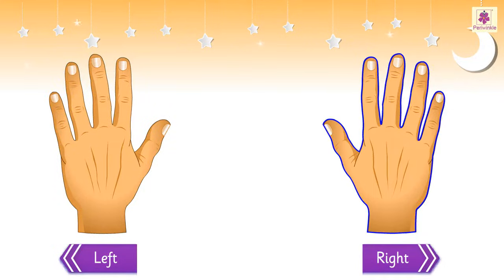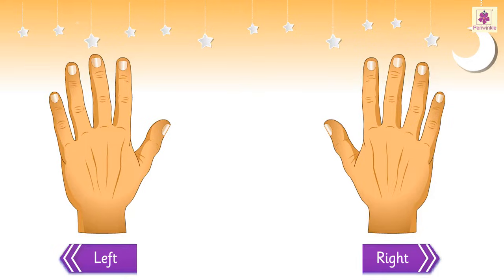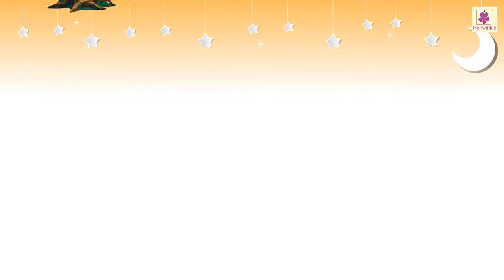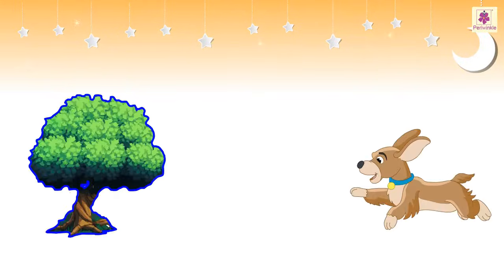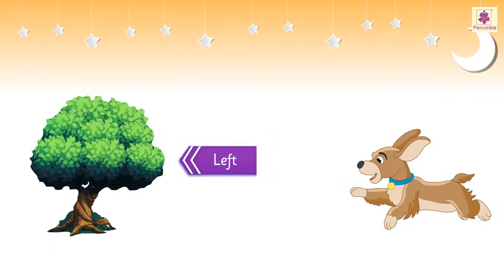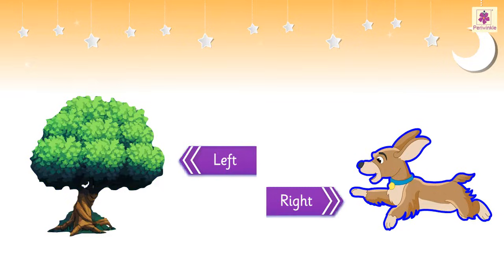Left and Right are used to tell the directions. For example, this tree is on the left and this dog is on the right.